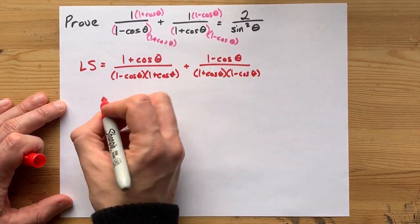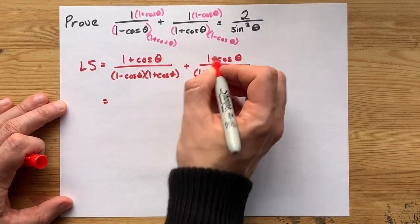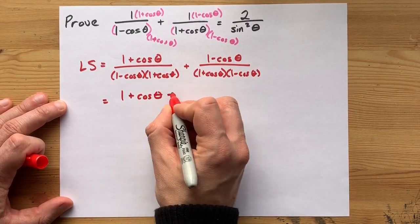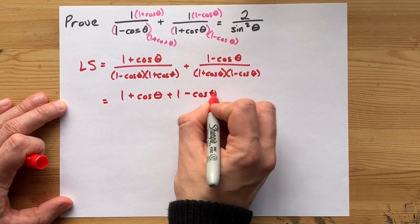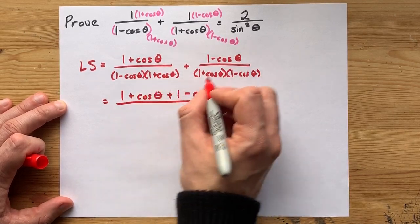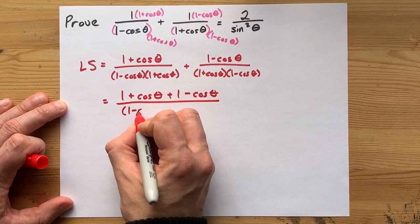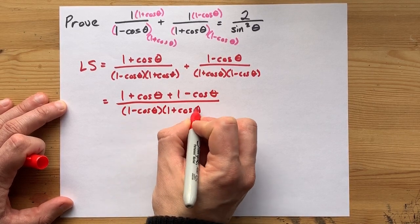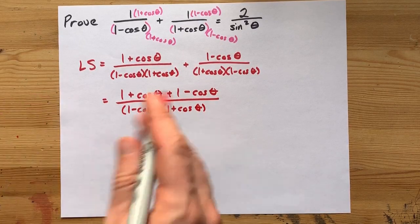Now, the bottoms actually match, so we can combine top plus top. 1 plus cos theta plus 1 minus cos theta all over the common bottom, which is 1 minus cos theta, 1 plus cos theta. This is going to clean up really nicely.